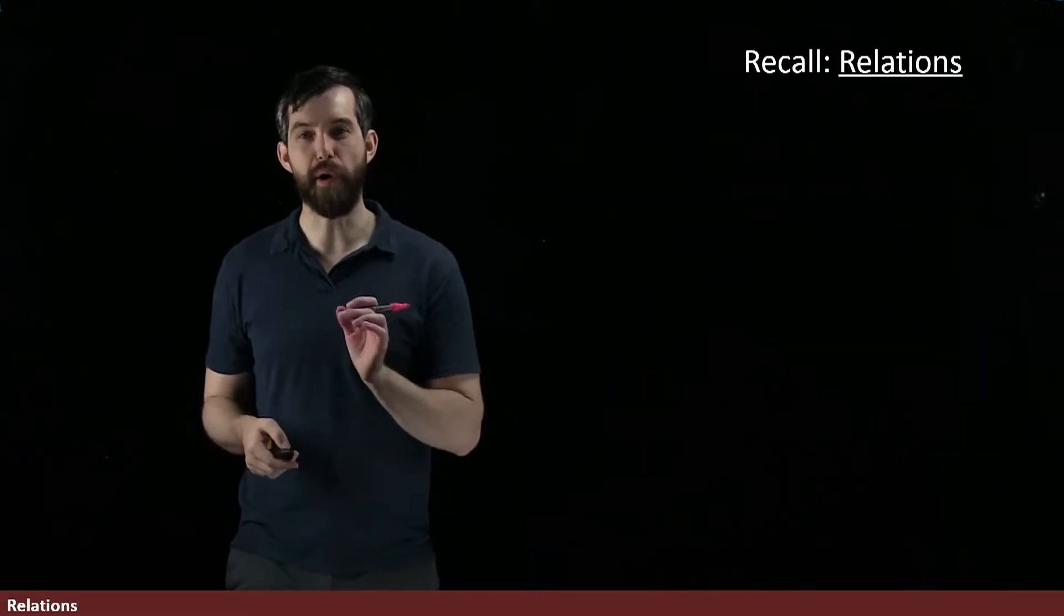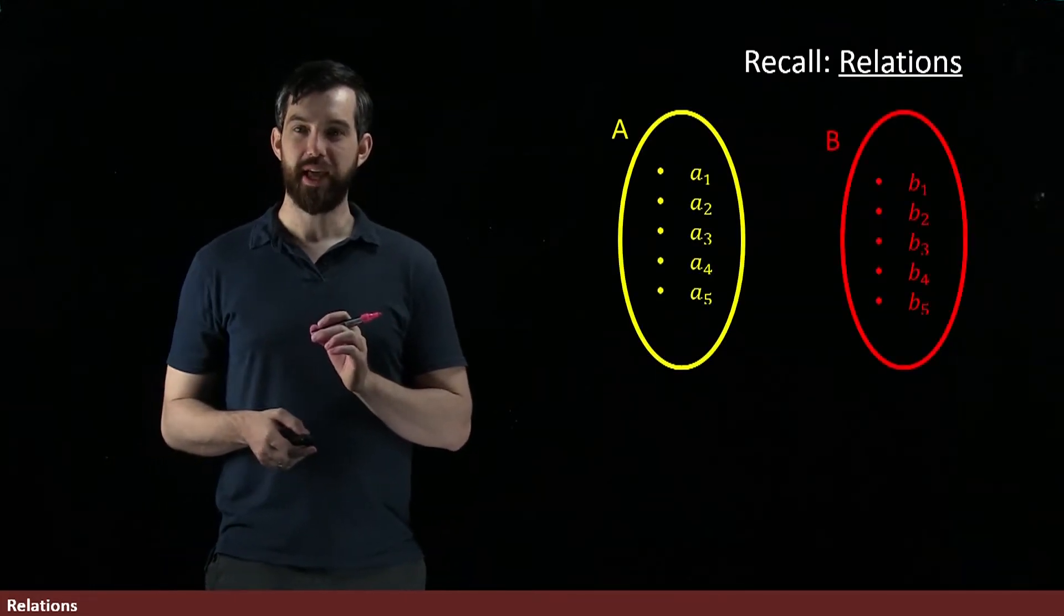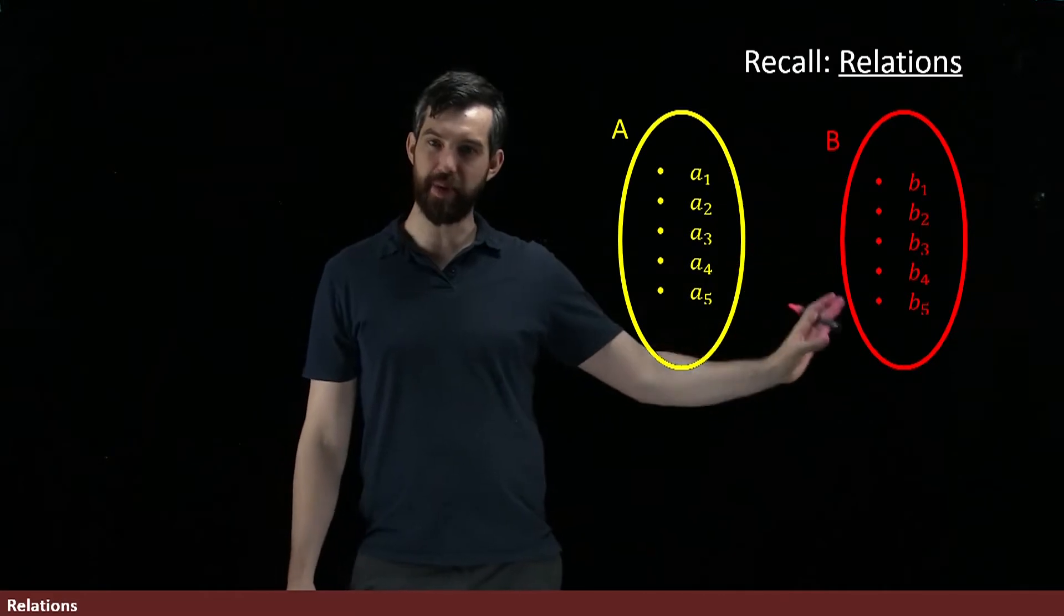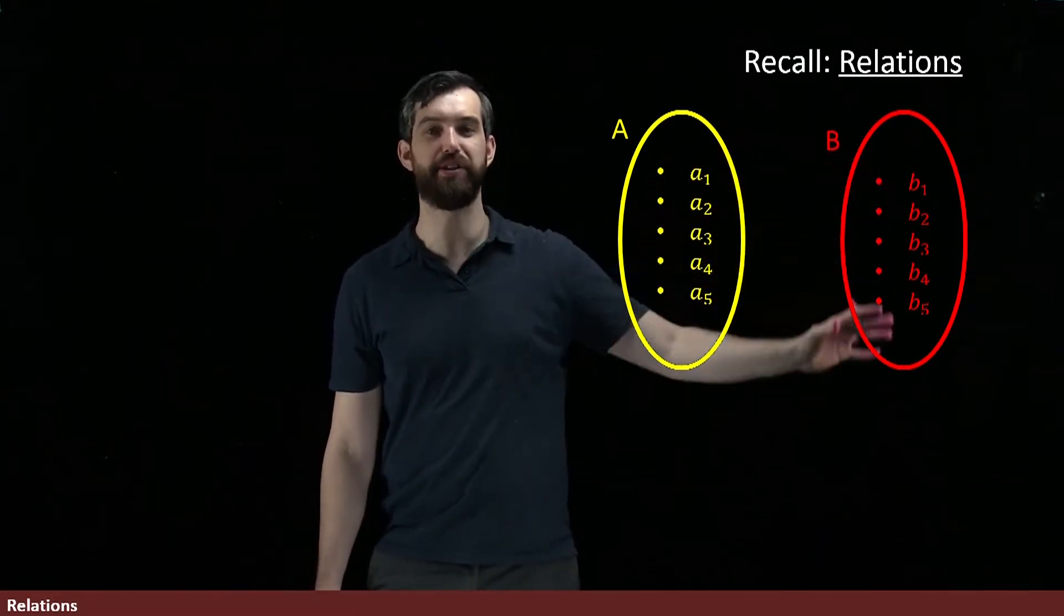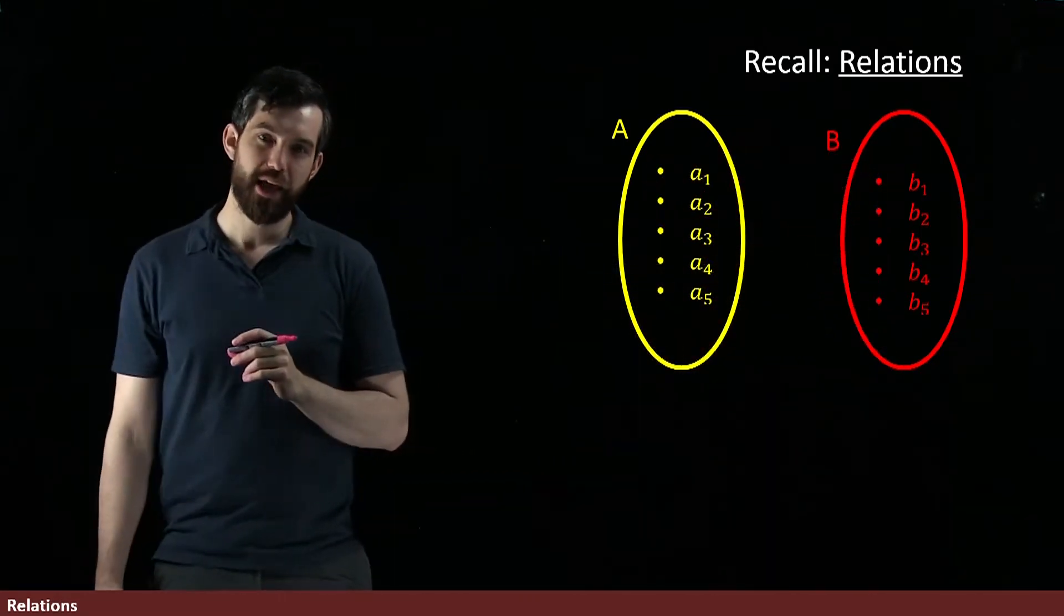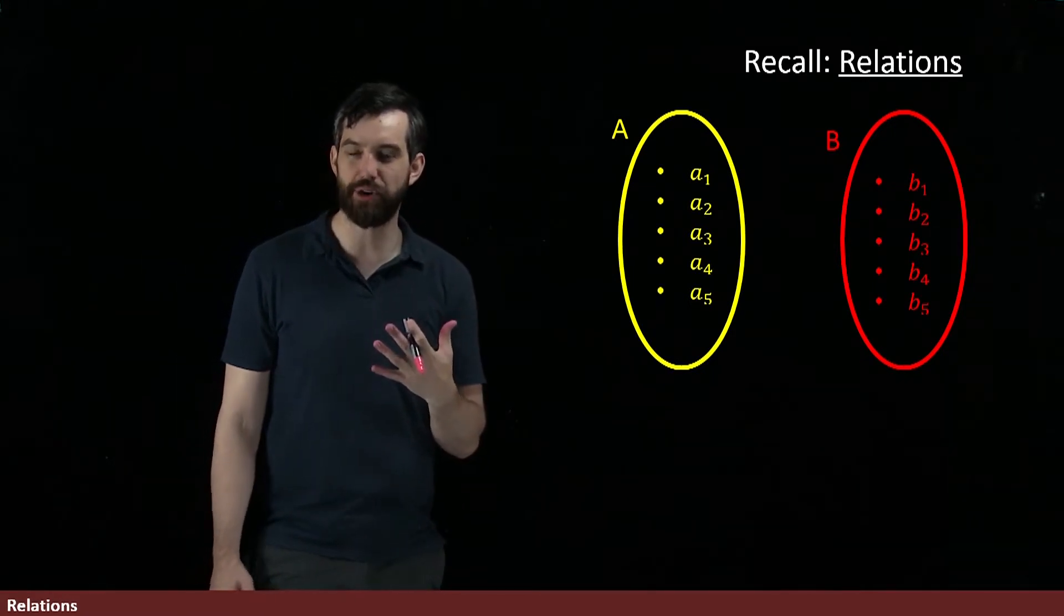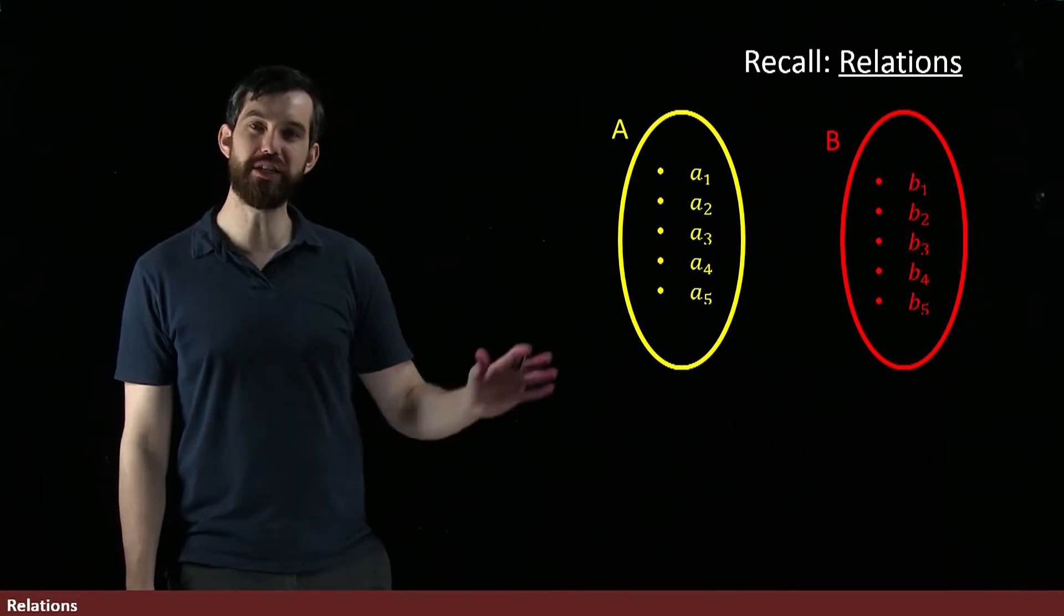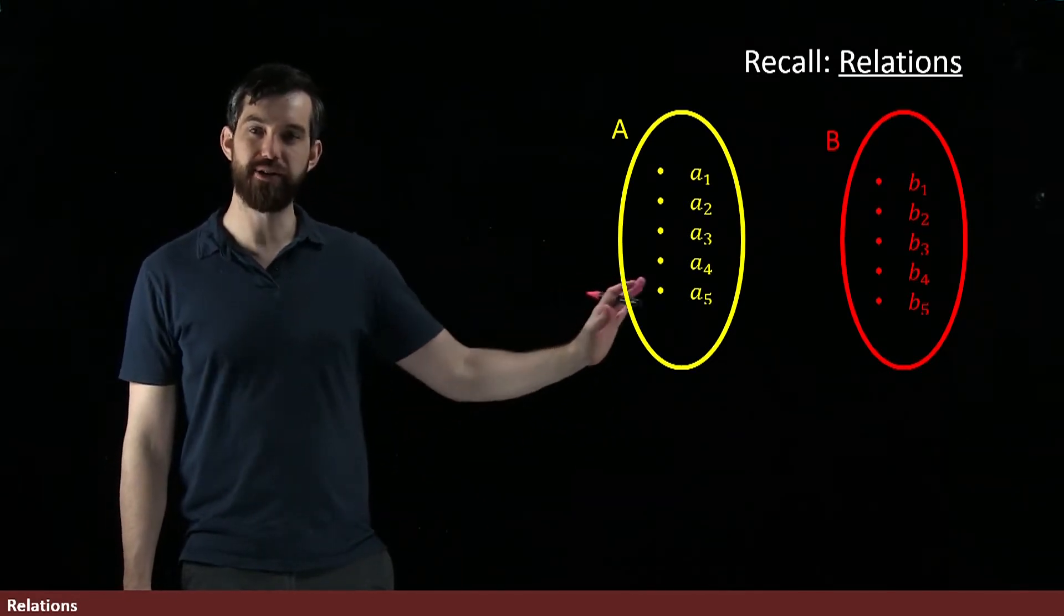Now, you'll recall that a relation is something that involved two different sets. You had a set A and you had a set B, and I put a bunch of elements inside of A and I put a bunch of elements inside of B. Then you could visualize an arrow diagram for a relation, which is connections from the set A to the set B.